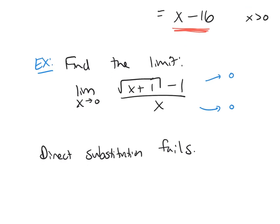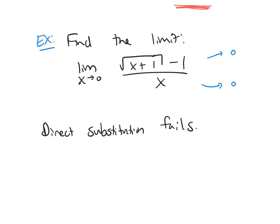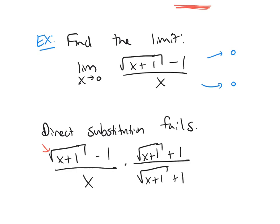But what I could do is I could take my function and multiply by 1. But I'm going to multiply by the conjugate of the numerator. So I'm going to take the numerator and just change the sign in the middle to plus 1, and I'm going to multiply the same thing on bottom.